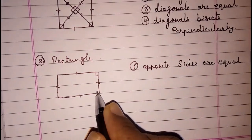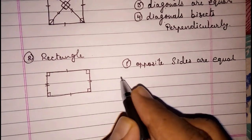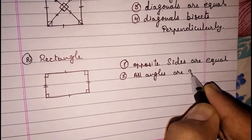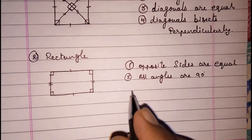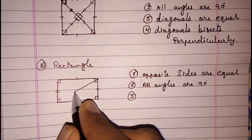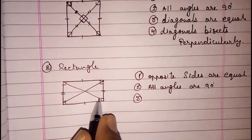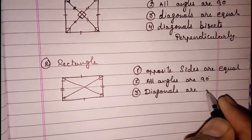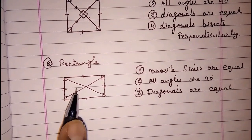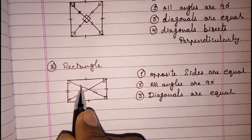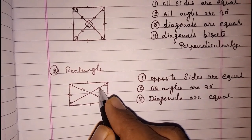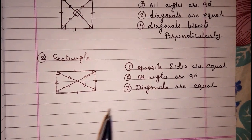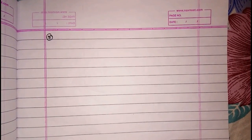The second property: all angles are 90 degrees. All angles are 90 degrees, or again you can say all angles are equal. Here also the diagonals are equal, and the diagonals are bisecting each other, but they are not bisecting perpendicularly — these two parts are equal. The third type is rhombus.